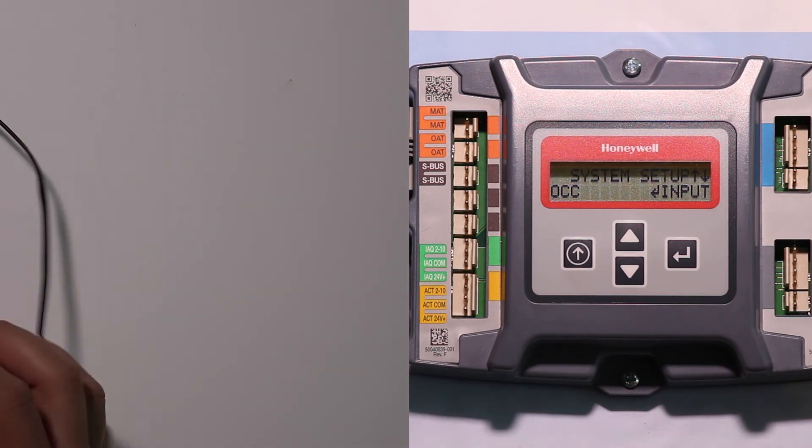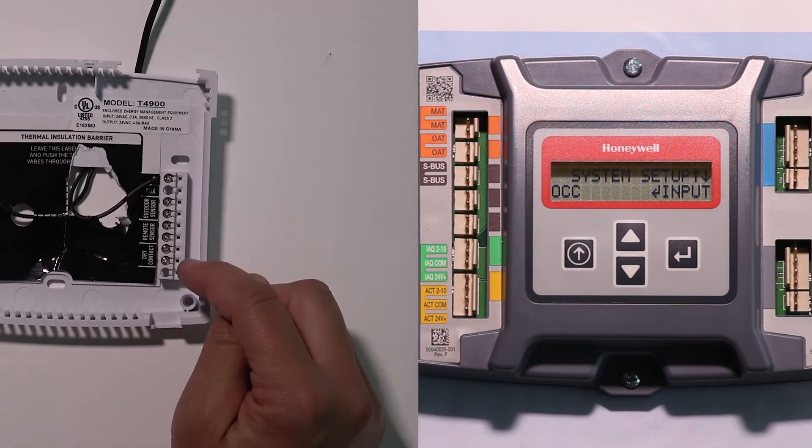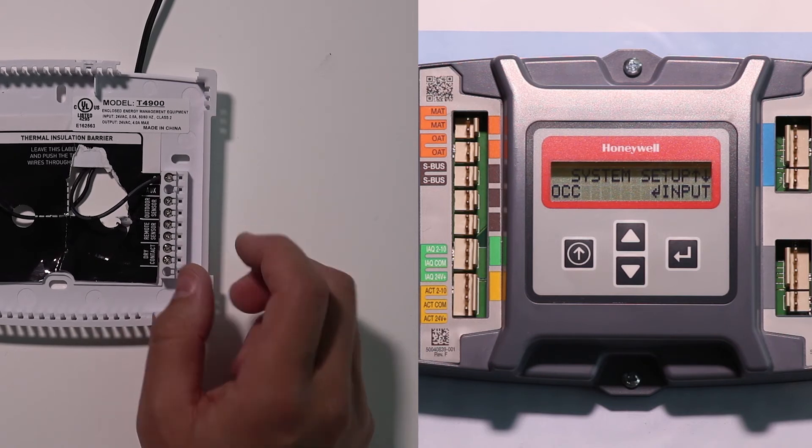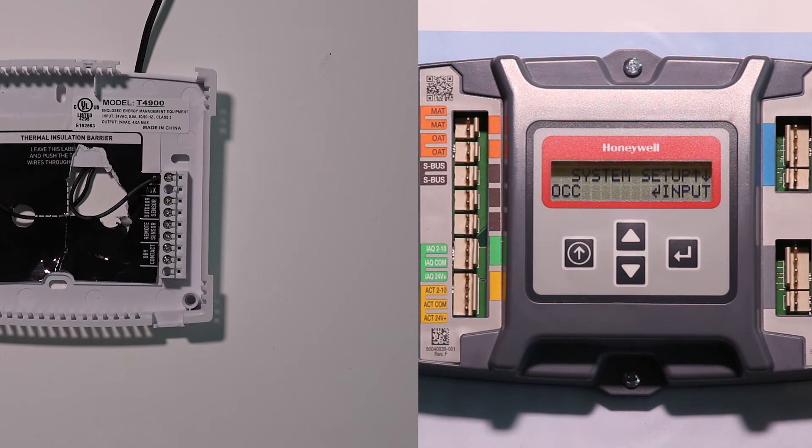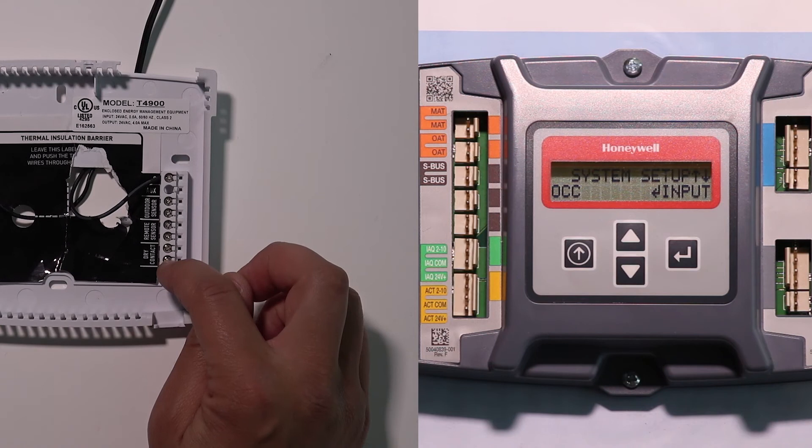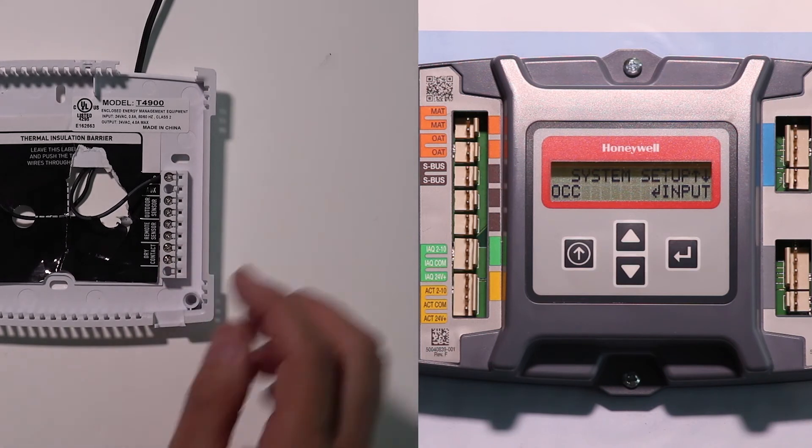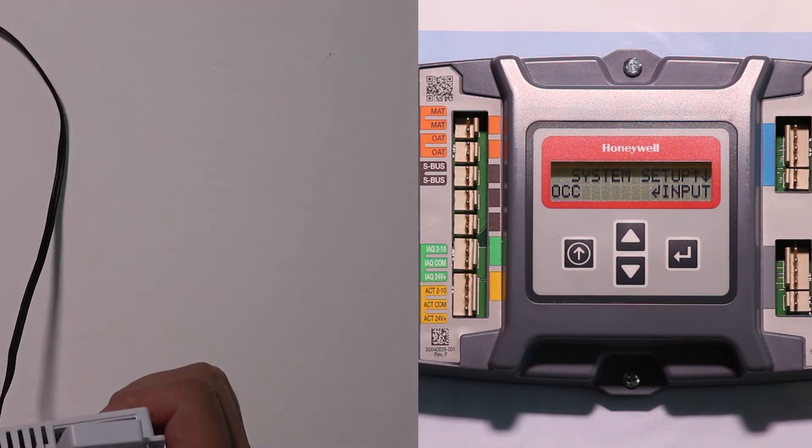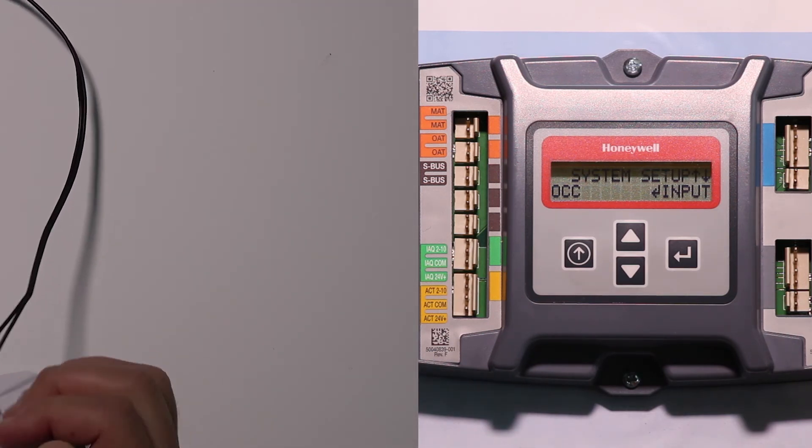So on our thermostat controller, we have this one labeled dry contact. There's two terminals there. Do not wire directly from the economizer controller to the thermostat. There needs to be an isolation relay between those two devices. So from AUX 1 output on the economizer and common to the relay, then from the relay to the dry contact inputs on the stat. That's our wiring scenario. Down in the notes of the video in the description, you'll find a link to a detailed wiring diagram and cheat sheet for this exact topic that we're talking about.